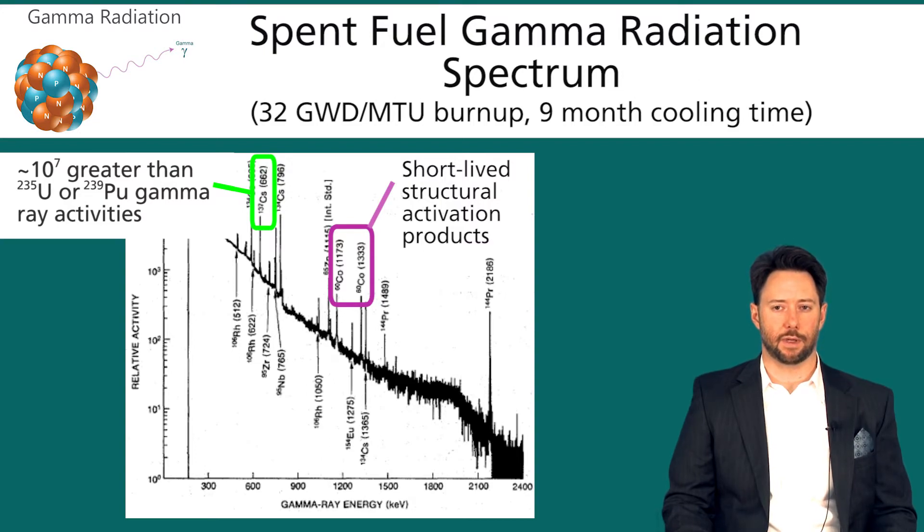What this means is that you are never going to see the uranium-235 or plutonium-239 gamma rays on a spectrum. The uranium and plutonium gamma radiation are completely masked by fission product gammas.